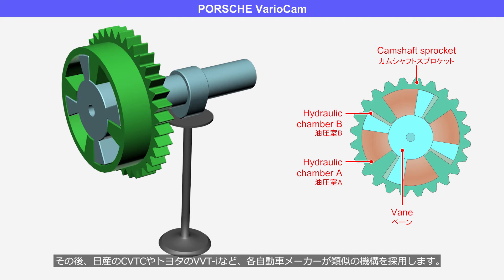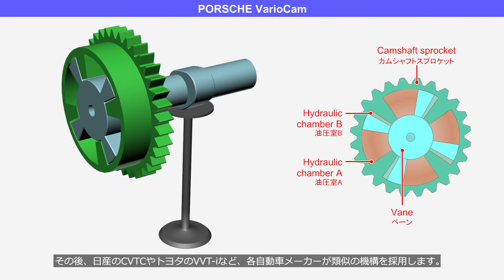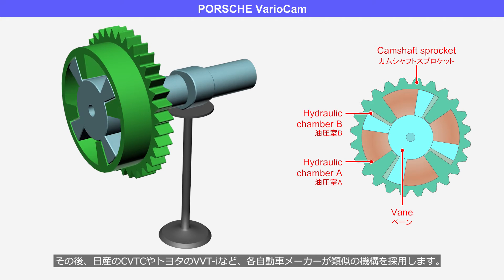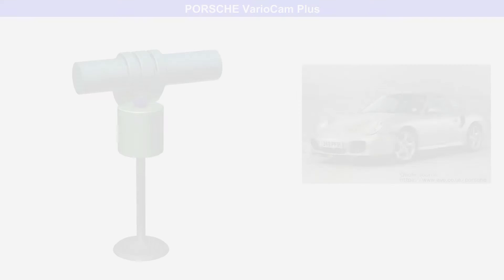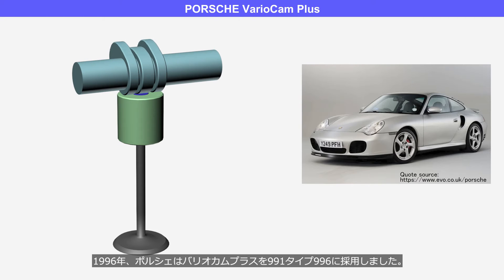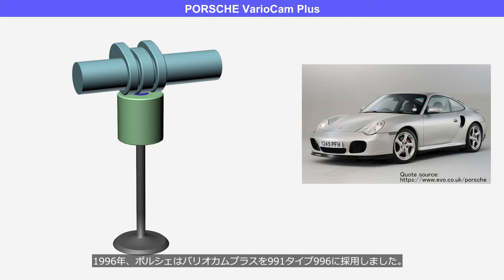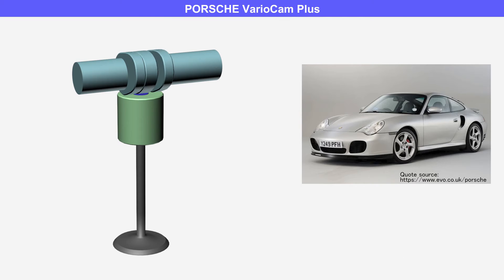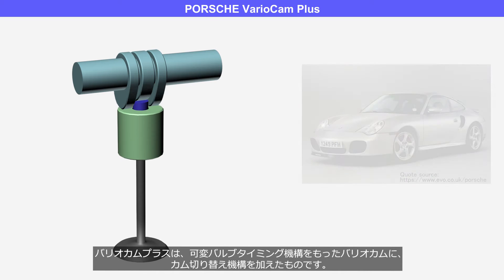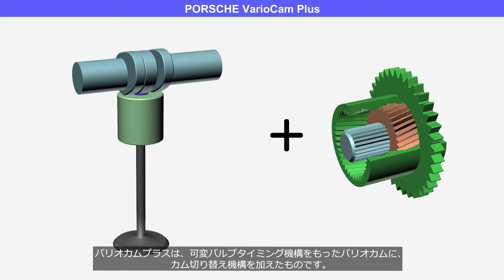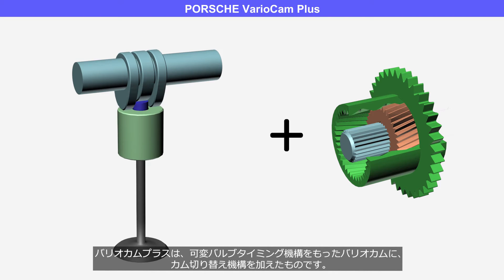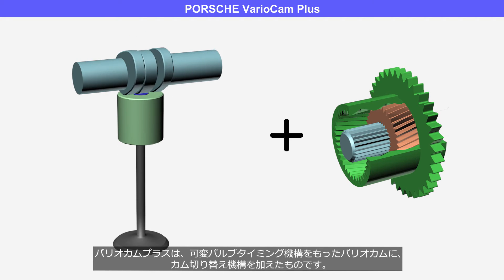Afterward, various automotive manufacturers adopted similar mechanisms, including Nissan's CVTC and Toyota's VVT-i. In 1996, Porsche adopted the VarioCam Plus for the 911 type 996. The VarioCam Plus is a combination of VarioCam, which has a variable valve timing mechanism, and a cam switching mechanism.